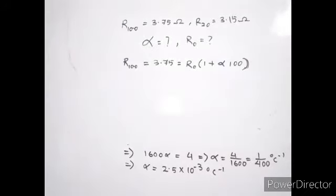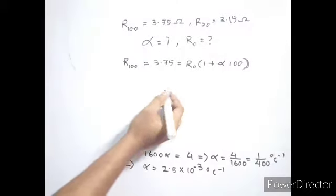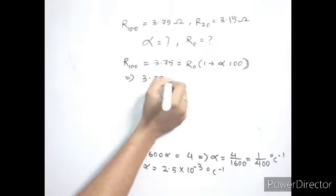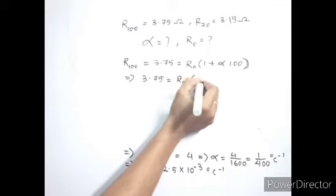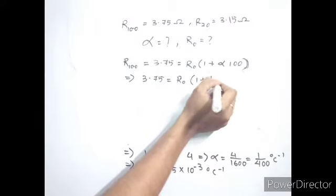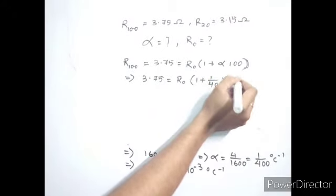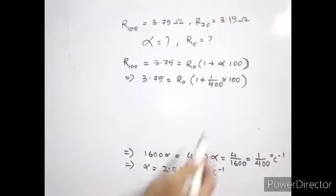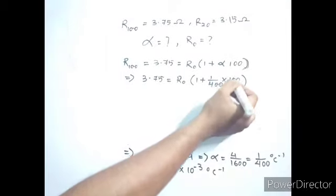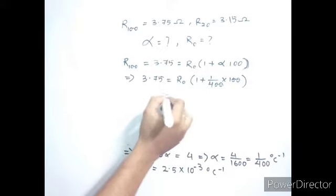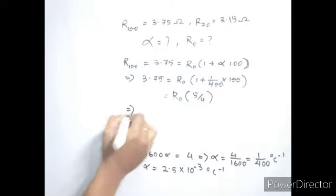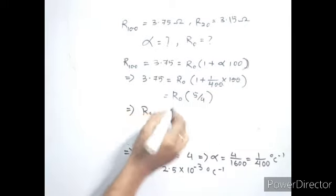To obtain the resistance at 0 degrees Celsius, we consider the equation for R at 100: 3.75 equals R₀ times 1 plus alpha, where alpha is 1 by 400 times 100. So 400 cancels with 100 to give 1 by 4, and R₀ times 1 plus 1 by 4 is 5 by 4.